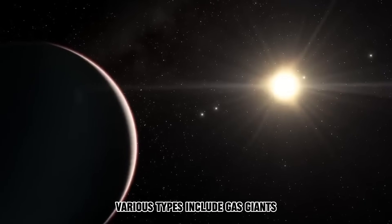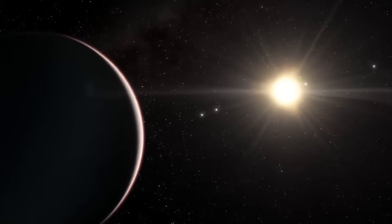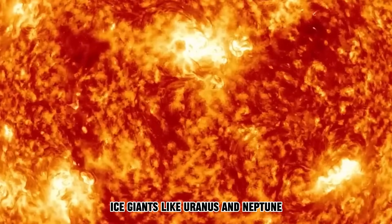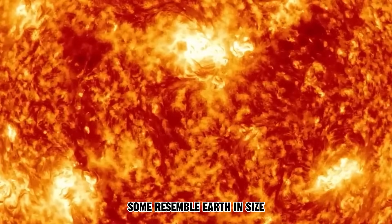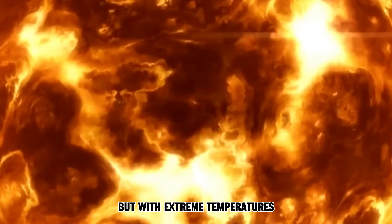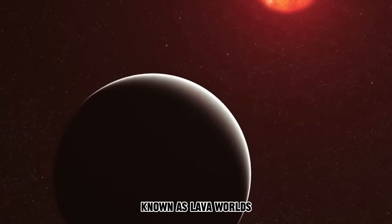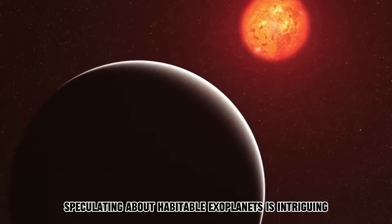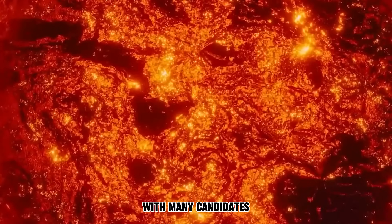Various types include gas giants like Saturn and Jupiter, ice giants like Uranus and Neptune, and super-Earths. Some resemble Earth in size but with extreme temperatures, known as lava worlds. Speculating about habitable exoplanets is intriguing, with many candidates.